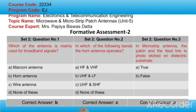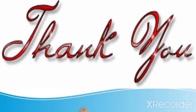I hope you got the answers. The antenna mainly used for broadband signals is the horn antenna. The horn antenna operates in the UHF and SHF bands. And in microstrip antenna, the patch and the feed line is photo-etched on the dielectric substrate — that is true. I hope you have understood the concept of microwave and microstrip patch antennas. Thank you.